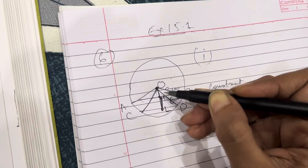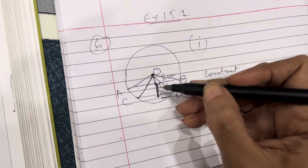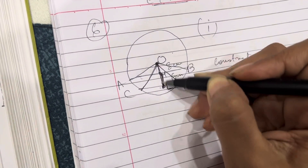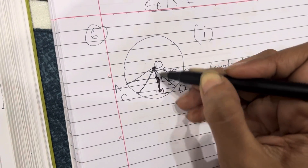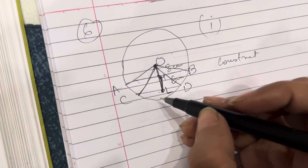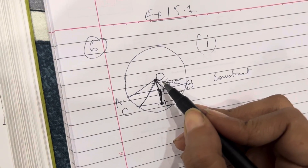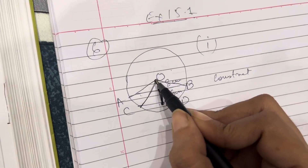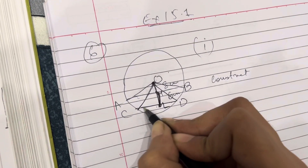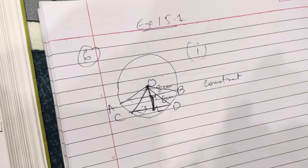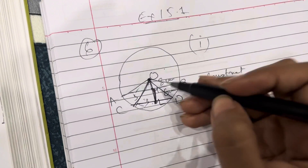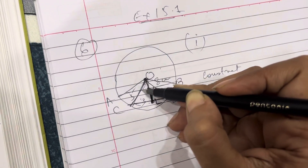We need to find the distance between the chords. In the first case, if they are on the same side, we calculate OL first. According to the theorem, the perpendicular drawn from the center to the chord bisects the chord. So for CD, if the whole length is 6, then CL will be 3.